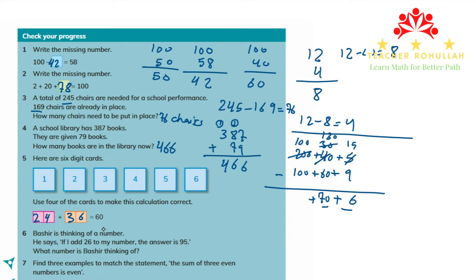6 plus 4 is 10. 0 of the 10 we write here and carry 1 above the tens place. Now 3 plus 2 is 5, and 5 plus this one is 6. So the answer is 60. This one is also solved. So we used 2, 3, 4, and 6. Out of the 6 digit cards, we use 4 of them. Let's scroll down to move to question 6.